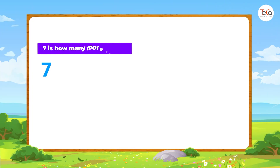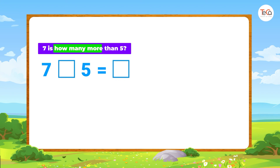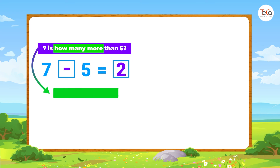Next: seven is how many more than five? We subtract five from seven to get two. So seven is two more than five.